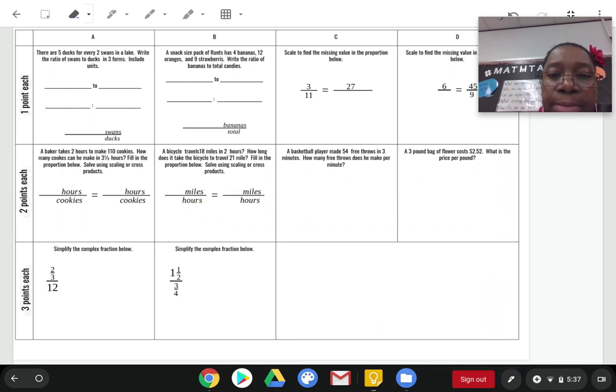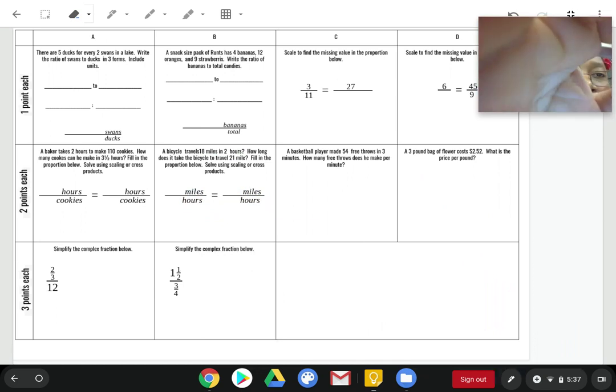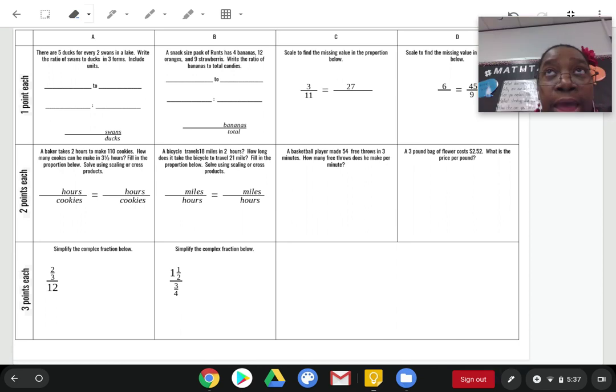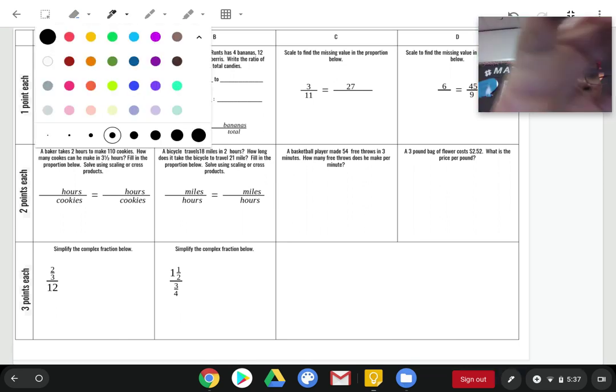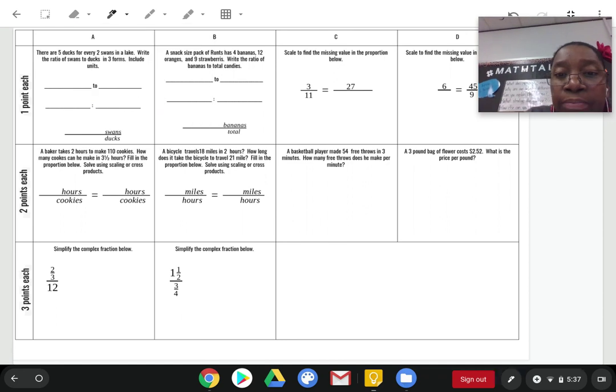The next one says, a basketball player made 54 free throws in 3 minutes. How many free throws does he make per minute? So, anytime you see something that asks how many per minute, that means just 1 minute, or how many per pound, or how many per hour, that means just 1. And to figure that out, we are going to find the unit rate, and all we have to do really is divide.